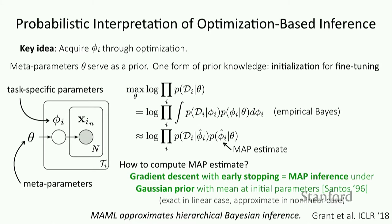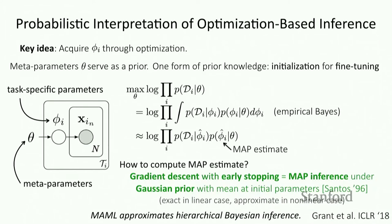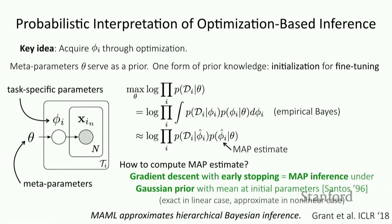In MAML we just pick a certain number of gradient steps — one or five — and the variance of this Gaussian prior is determined by the number of gradient steps and the step size. Unlike typical neural network training, we're picking the number of gradient steps rather than choosing a stopping criterion based on validation error. So you can essentially view the initialization of these parameters as serving as an actual explicit prior in a Bayesian model.